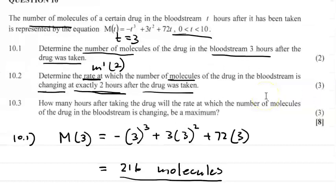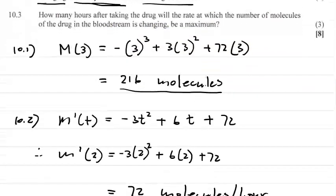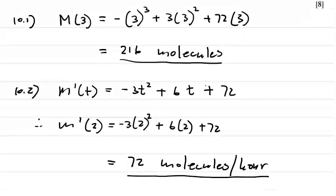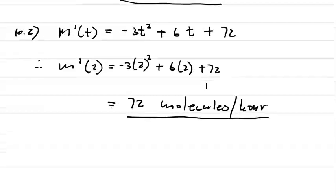If we look at the question once more, it says determine the rate at which the number of molecules of the drug in the bloodstream is changing at exactly two hours after the drug was taken. So the answer is 72 molecules per hour.